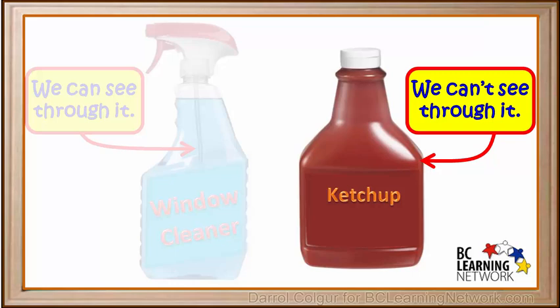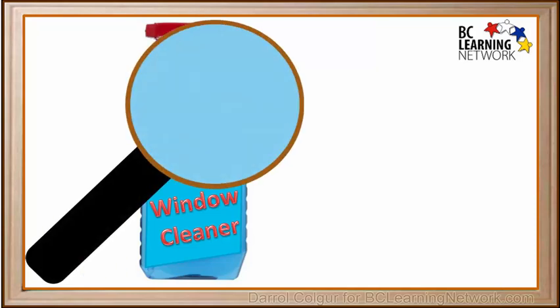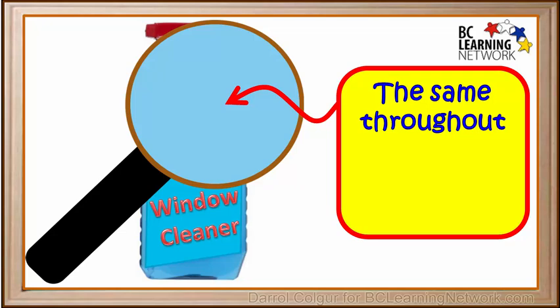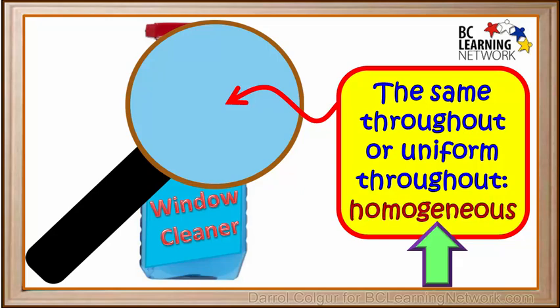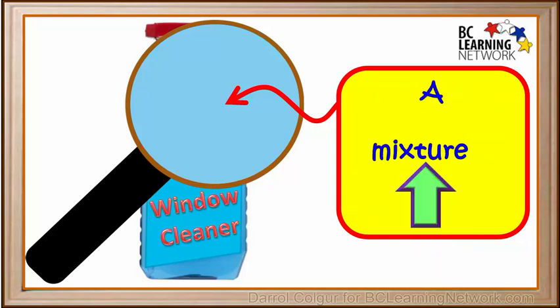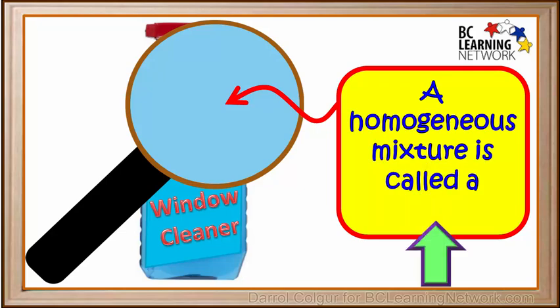Let's take a closer look at these two liquids. We'll zoom in and magnify the window cleaner. Even when it's magnified, the window cleaner looks the same everywhere — uniform throughout. Something that is uniform throughout is said to be homogeneous. Window cleaner is made by mixing certain chemicals with water, so we know it's a mixture. It's also homogeneous, so it's a homogeneous mixture. A homogeneous mixture is called a solution.